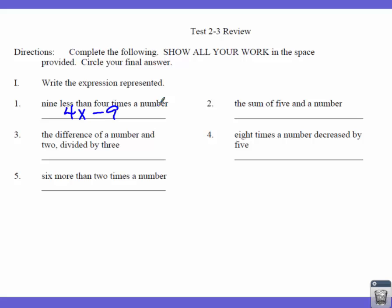Number 2: the sum of 5 and a number. There are a few words that mean something special — sum is one of those. Sum means that we're going to add something together. When you see sum, put a plus sign. That plus sign goes where the 'and' is.